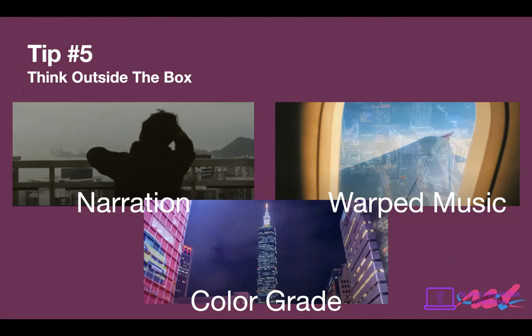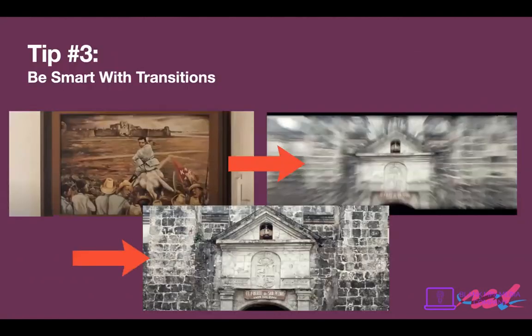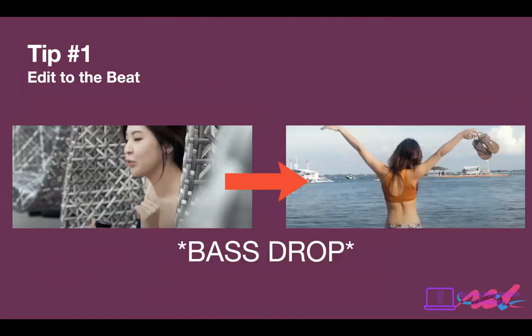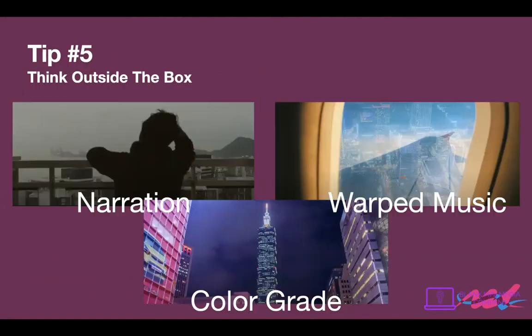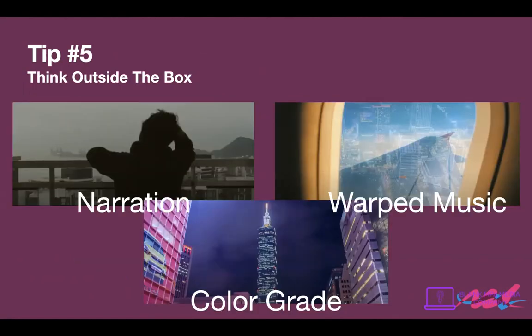The breaking-the-rules thing kind of goes against the first four tips, but to be honest, these tips are here just in case you're starting out and want to improve your travel videos. Tip number five — think outside the box — is where you don't think conventionally about what a video is supposed to be like: the narration, the warp music, the color grade, the way you use masks.